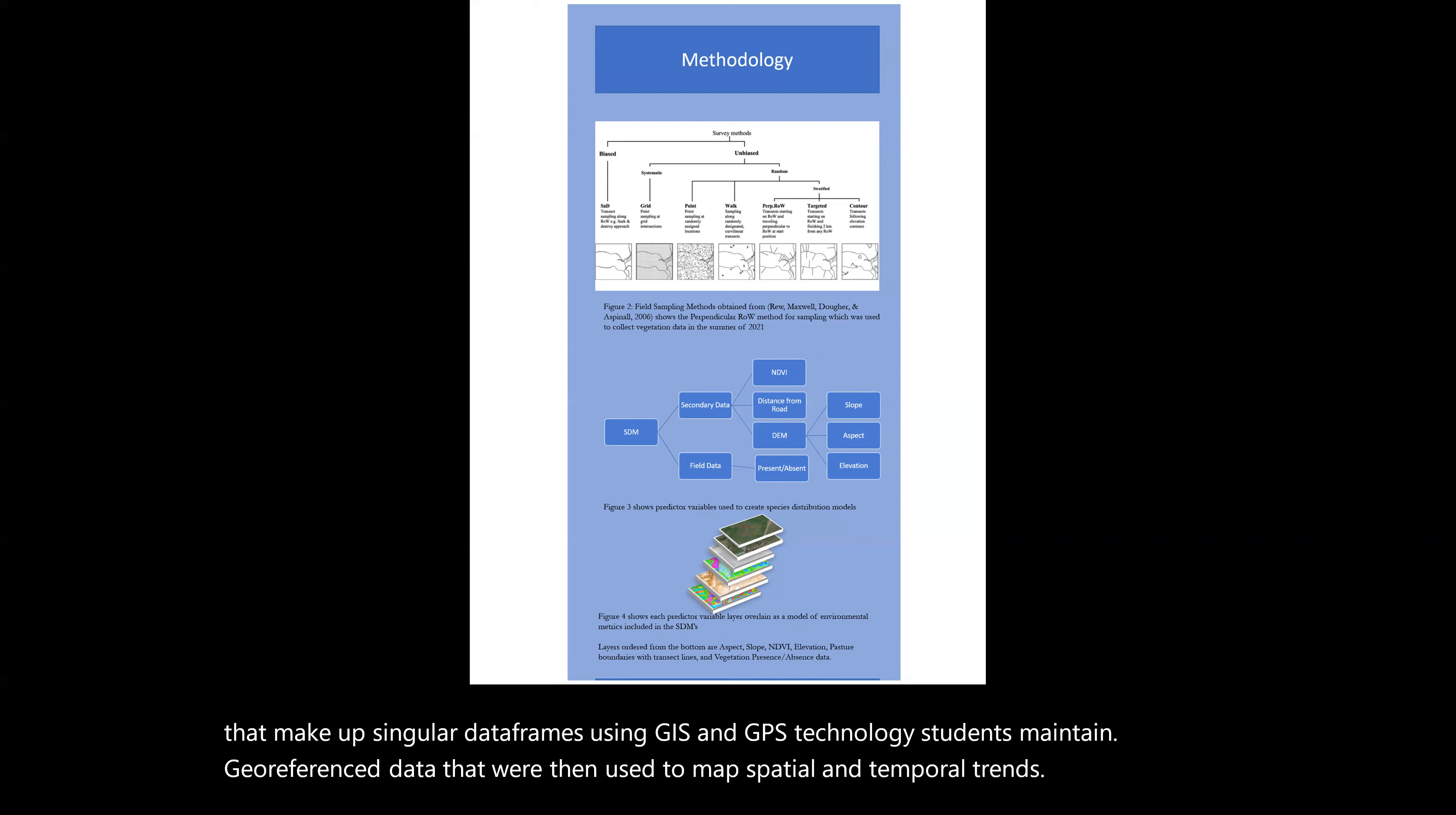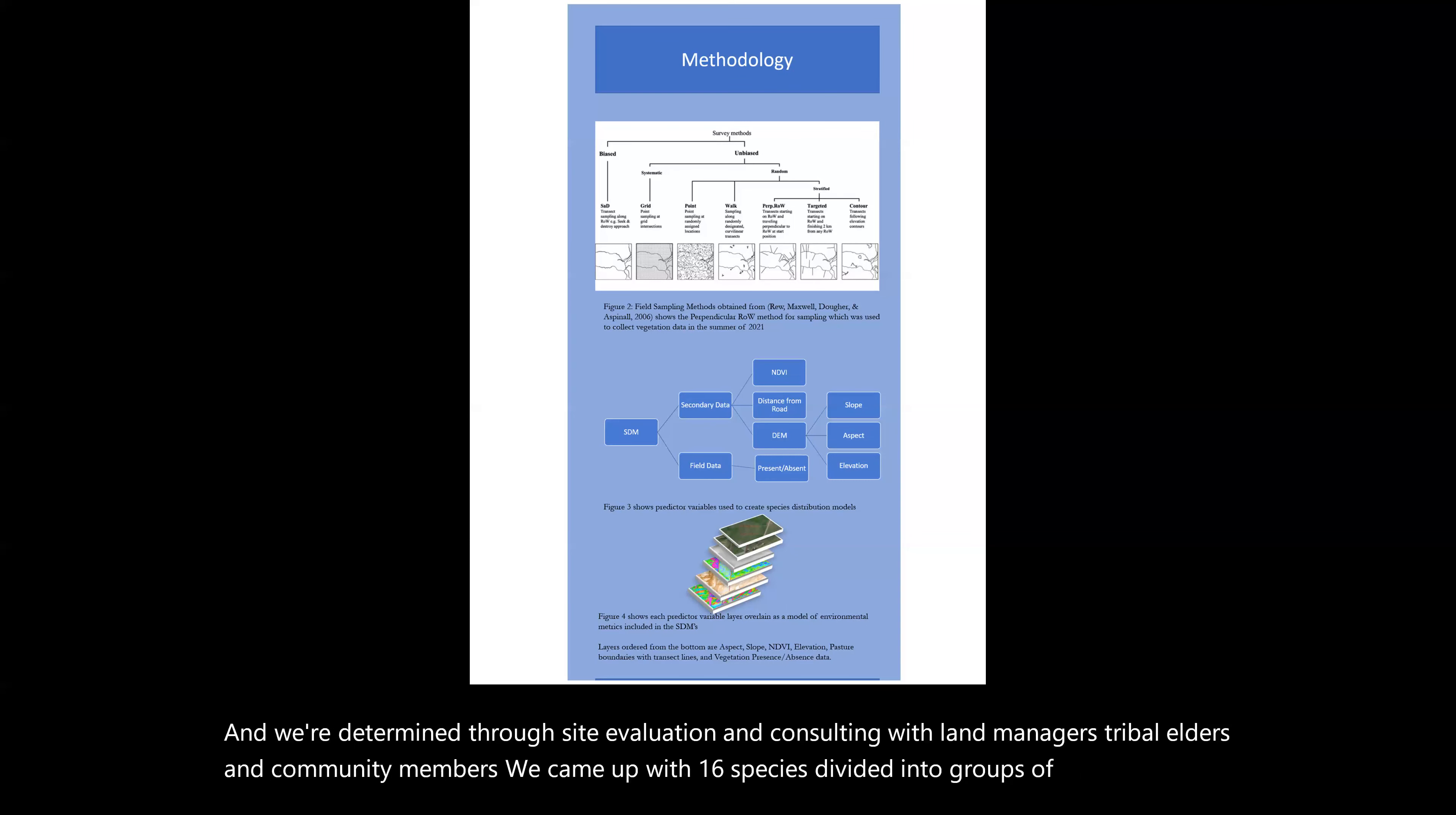Vegetation and species of interest were determined through site evaluation and consulting with land managers, tribal elders, and community members. We came up with 16 species divided into groups of common or rare native species, invasive or toxic species, and bison forage species.